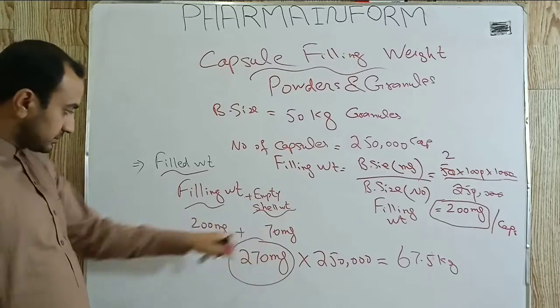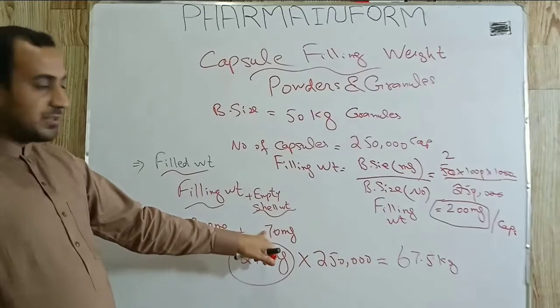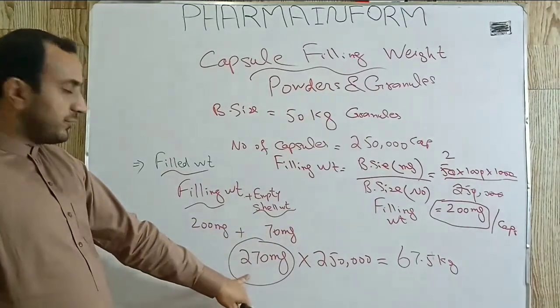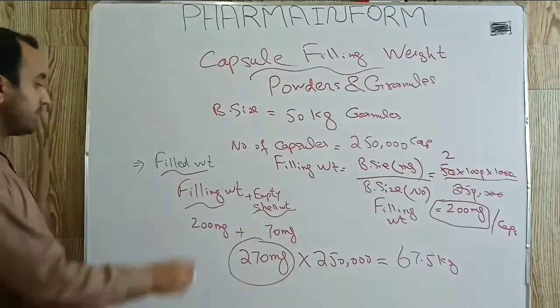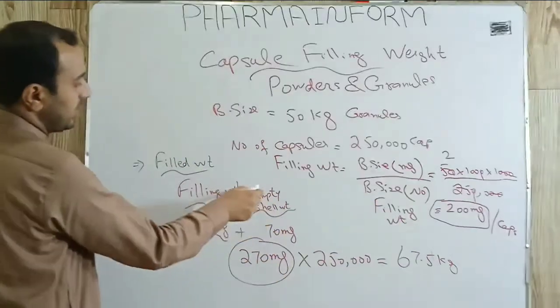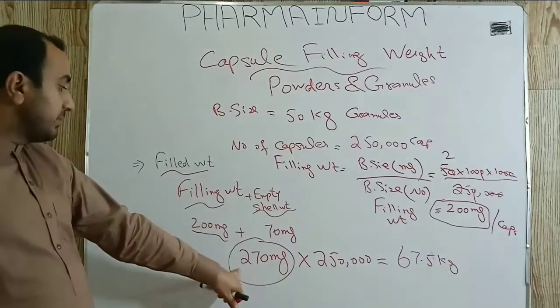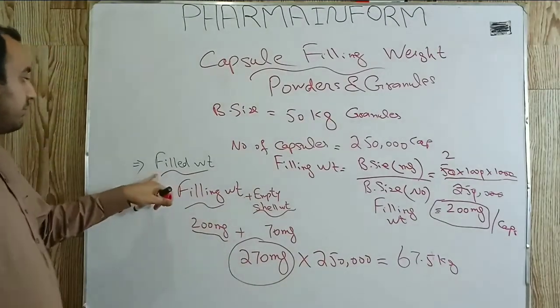Shell number one has an average weight for a single shell of 70 mg. We will add filling weight plus empty shell weight to get the filled weight. 200 mg was the filling weight, 70 mg is the empty shell weight, so our result is 270 mg and it is the filled weight.